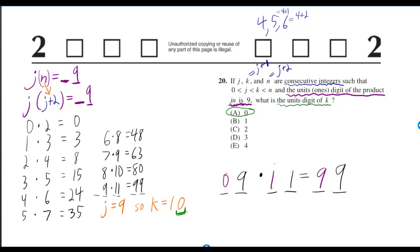But remember that just means j is equal to 9, so k is still 10, which means the units digit is 0.